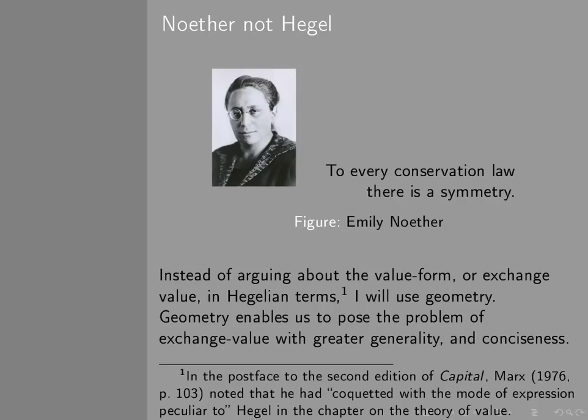Now, in approaching the form of value, I'm not using Hegel. I'm using someone somewhat more recent, though still over a hundred years ago. I'm using the approach of Emily Noether, the German mathematician, who said that to every conservation law there's a symmetry. And instead of arguing about value form in Hegelian terms, I'm going to use geometry.